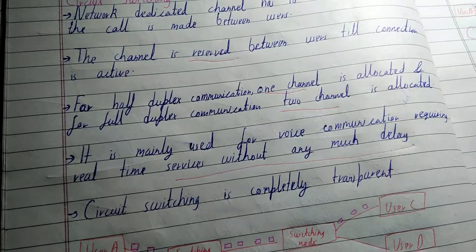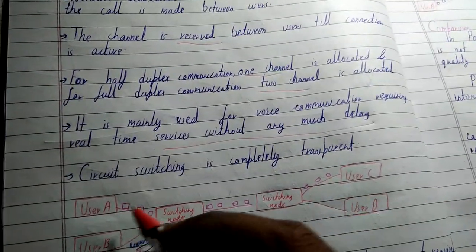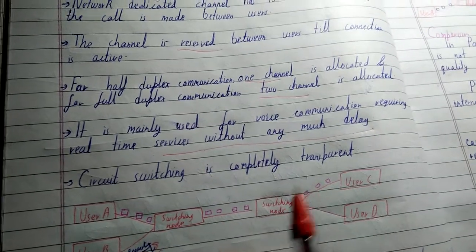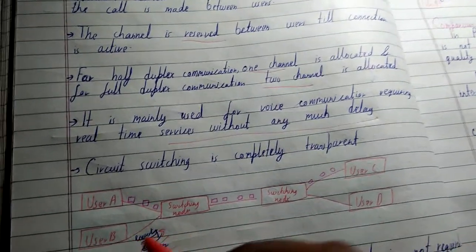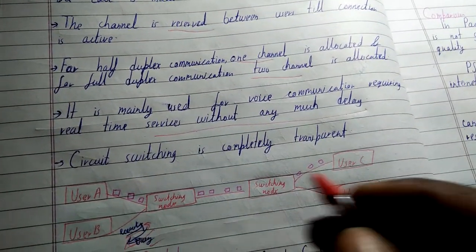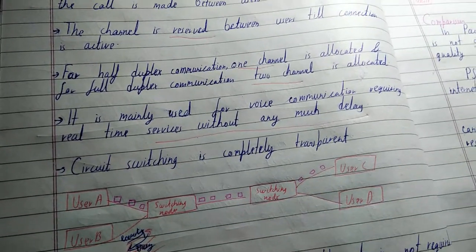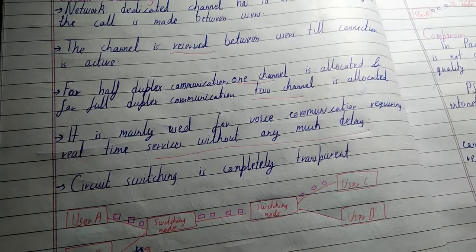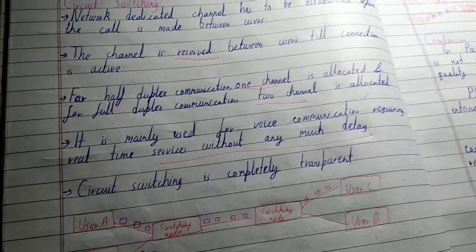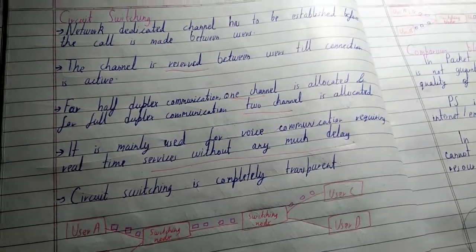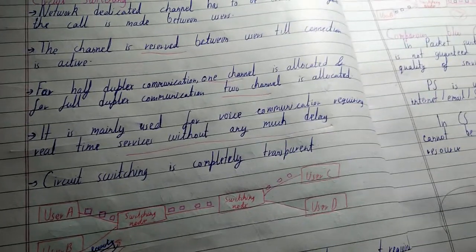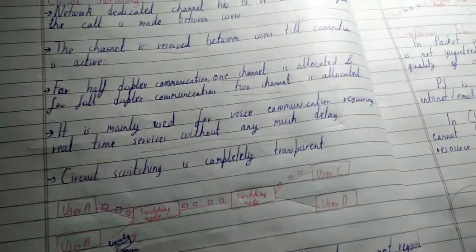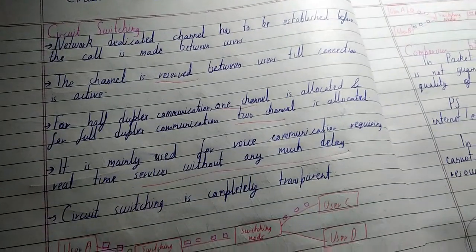The connection will be maintained regardless of whether the user is sharing data or communicating. The connection needs to be inactive before user B or any other user can call. It's like when you call your friend, your number is busy and your friend's number is also busy until you both finish talking. When you end the call, only then can another person call. That is an example of circuit switching.